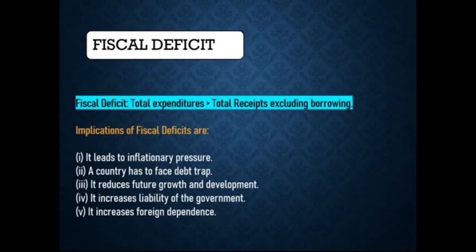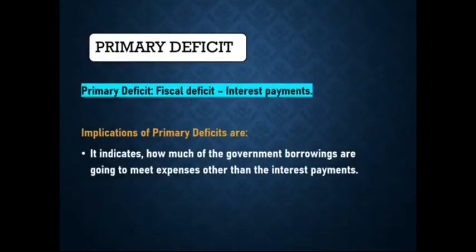The fourth implication is it increases the liability of the government, and the last one is it increases foreign dependence. Now let's go to the next slide which is about primary deficit.